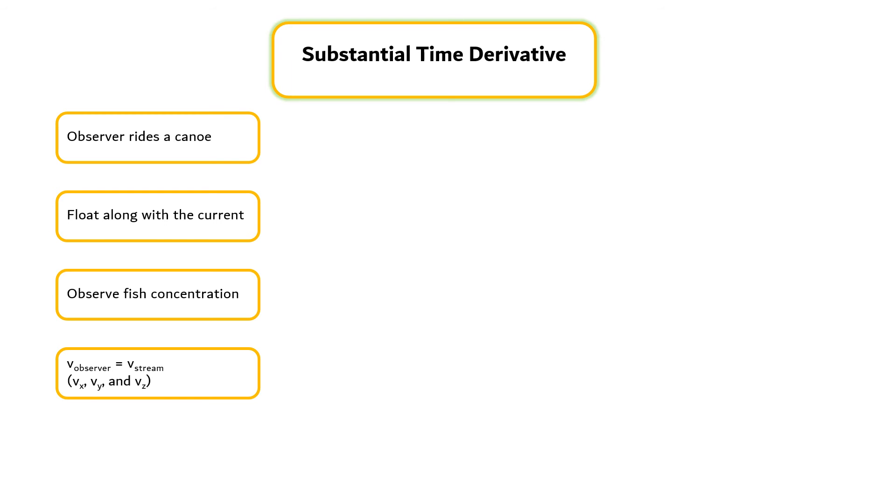The stream has components vx, vy, and vz. At any instant, the time rate of change of fish concentration can be expressed by Equation 6.2.